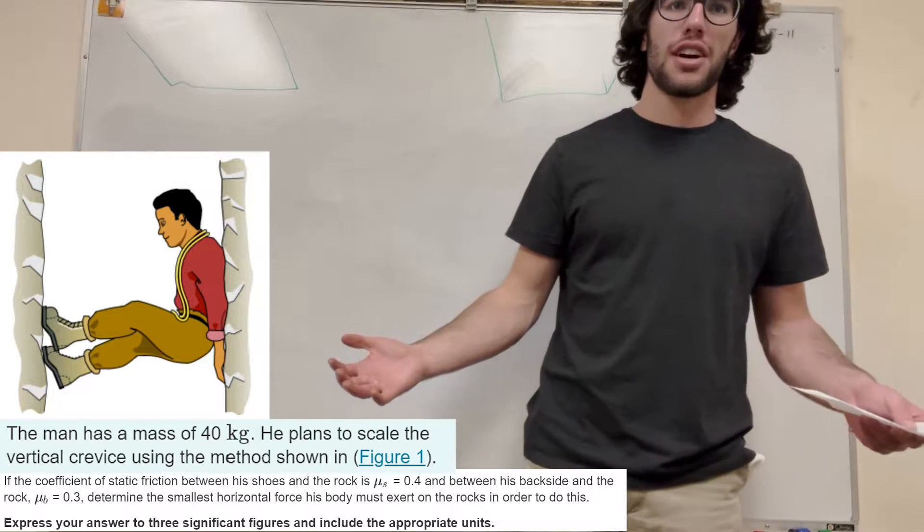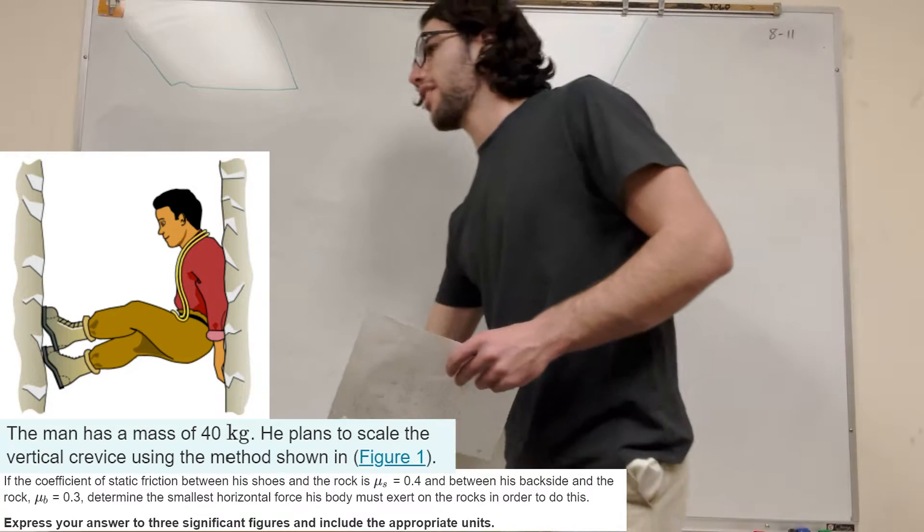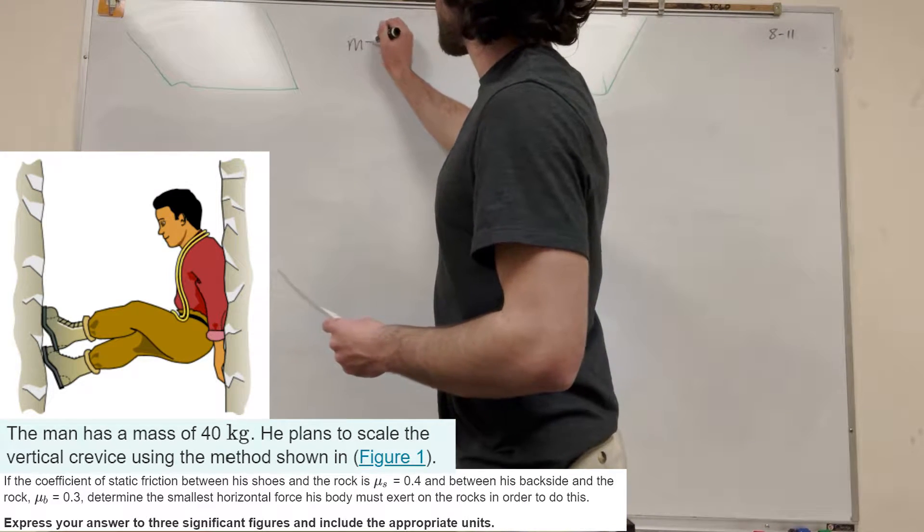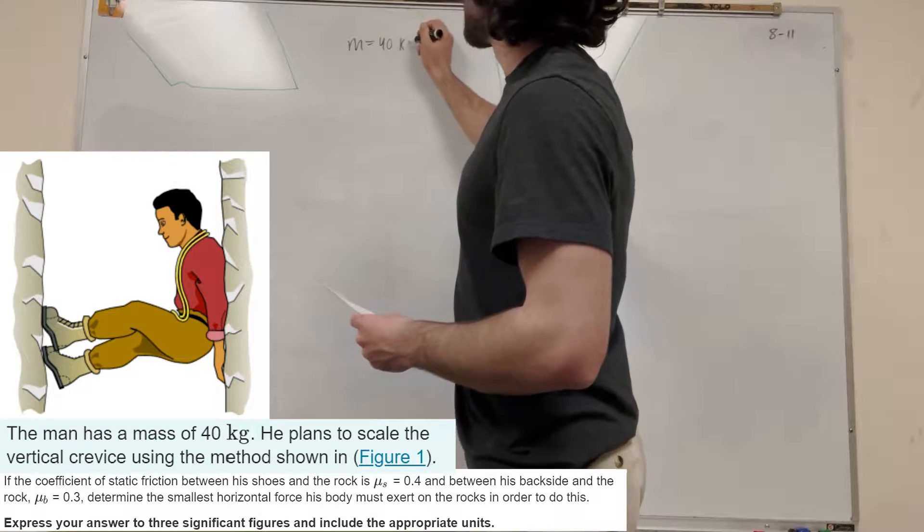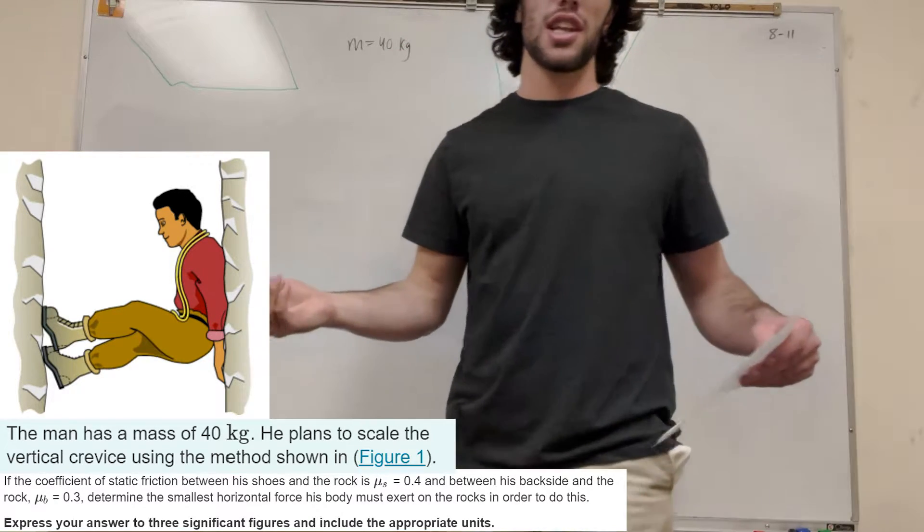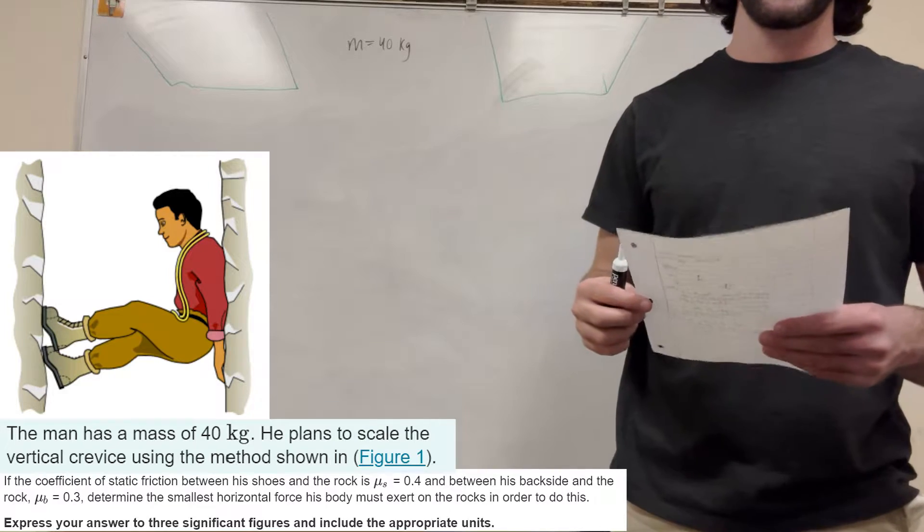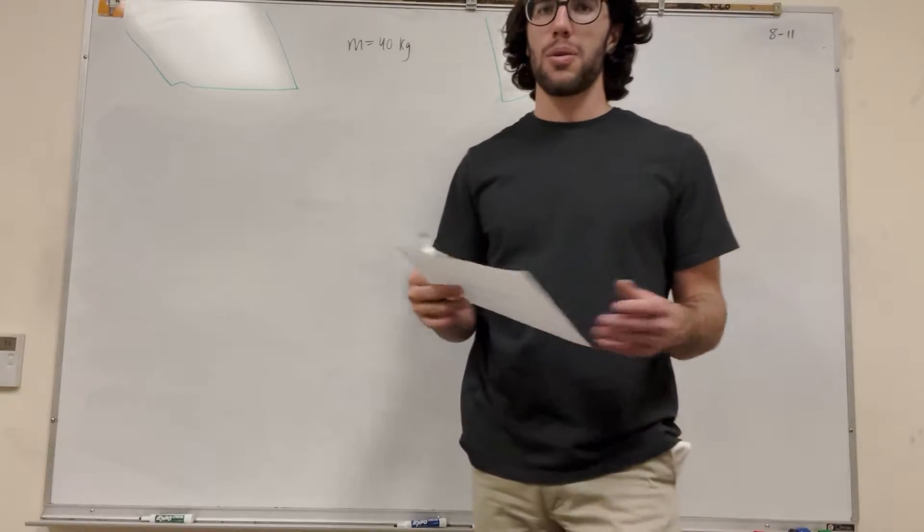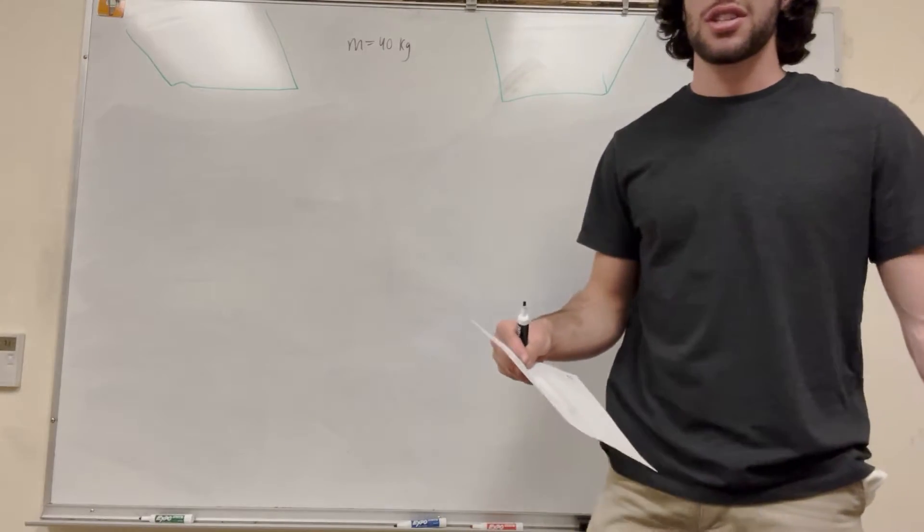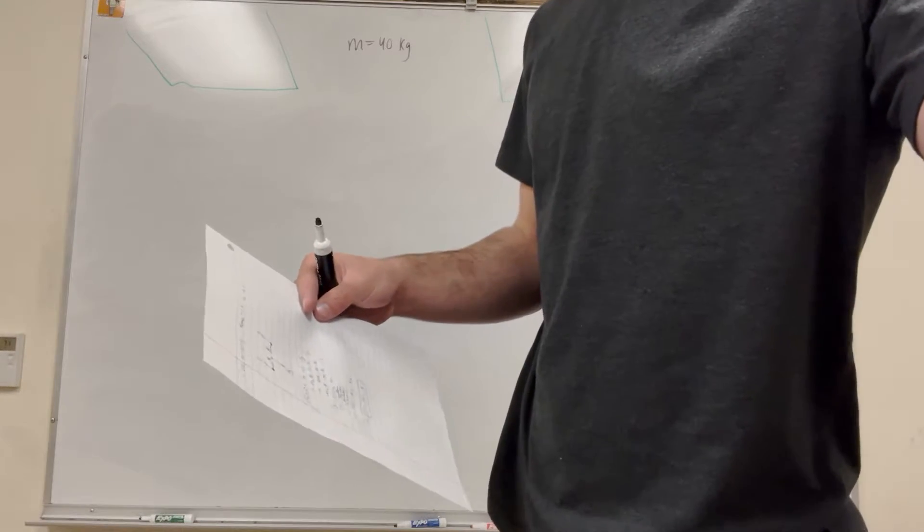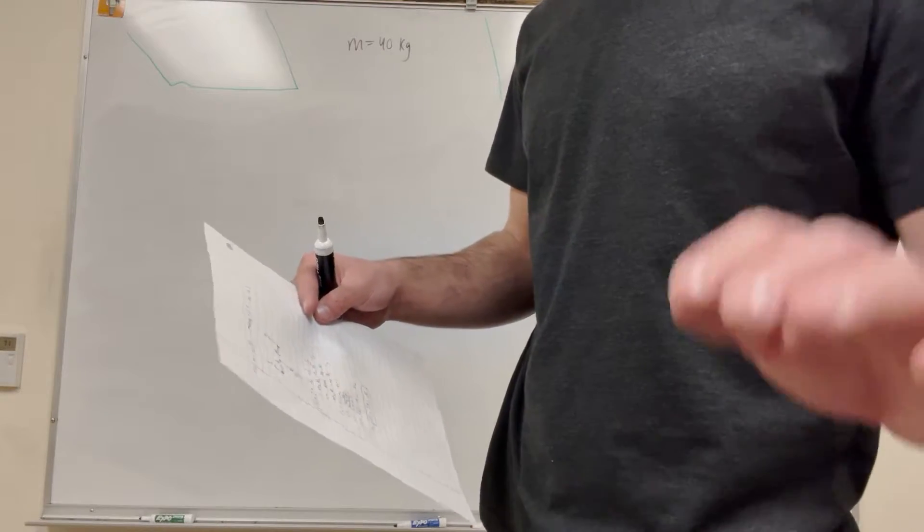So a man is 40 kilograms. Let me draw that right there down. Mass is 40 kilograms. And then he's wedged between these two rocks like so, and he's using the crevice to try to push himself up. And what we're solving for is what is the minimum force that he must apply to the walls in order to not fall down, basically.